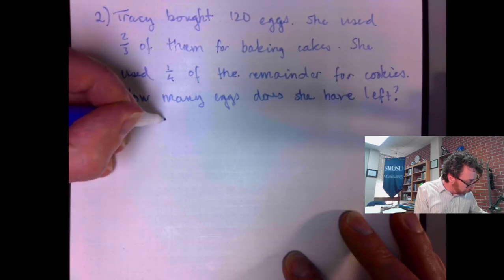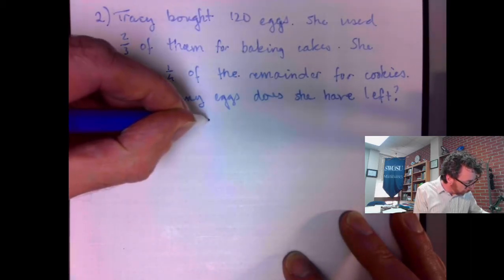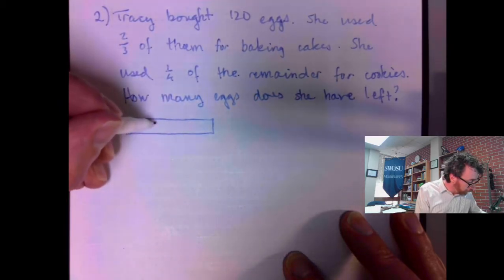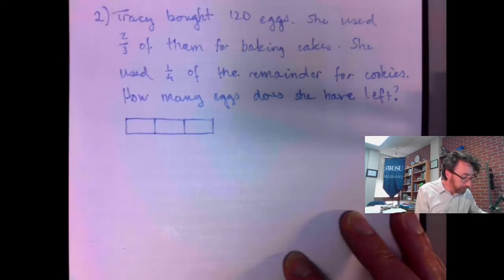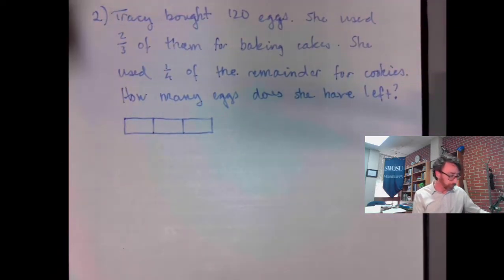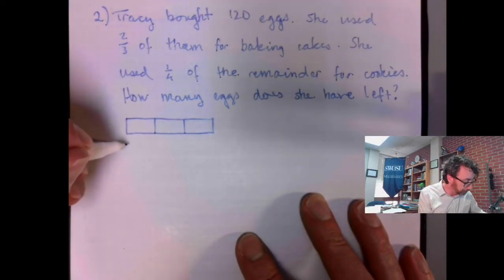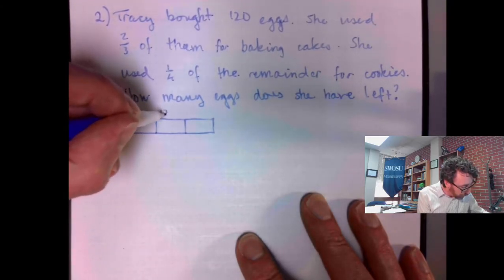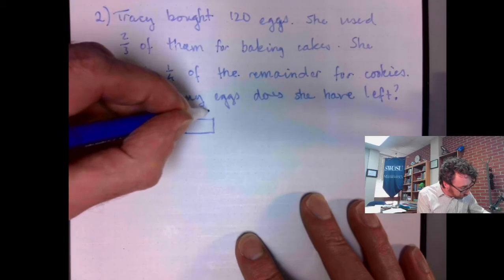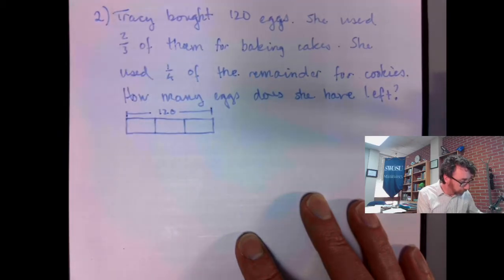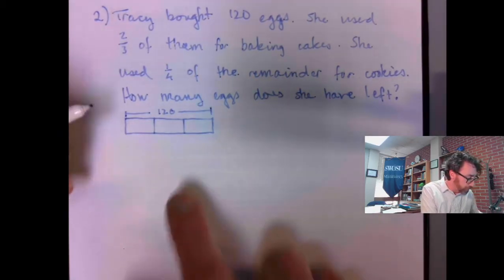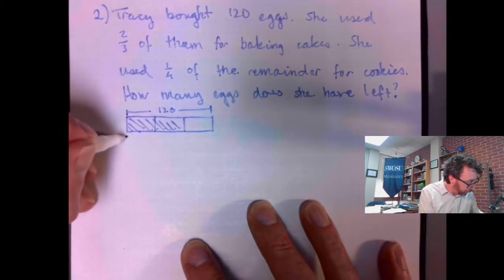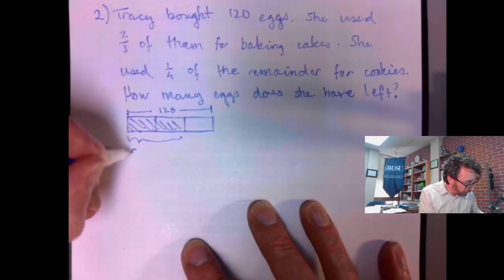What I'm going to do is make my bar diagram. I'm going to cut this bar diagram into three equal pieces. I know that this entire length is 120. She used two-thirds of them for baking the cakes. So, these are gone. They went to cakes.